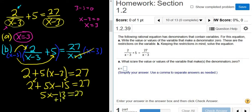Add the 13. So you get 5x equals 27 plus 13 is 40. Finally, to finish, we just divide by 5. And then 40 over 5 is 8.